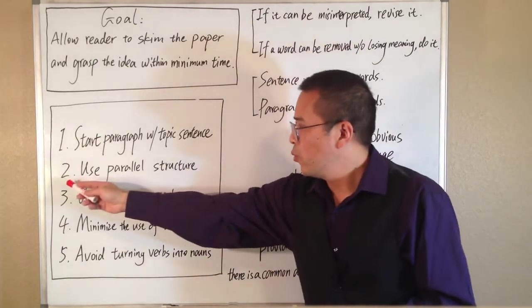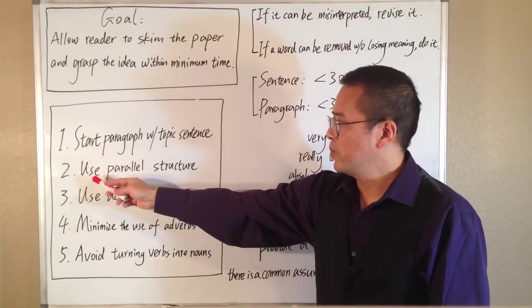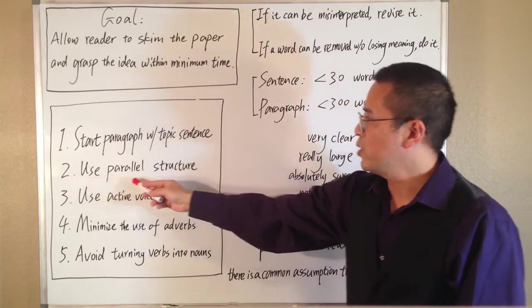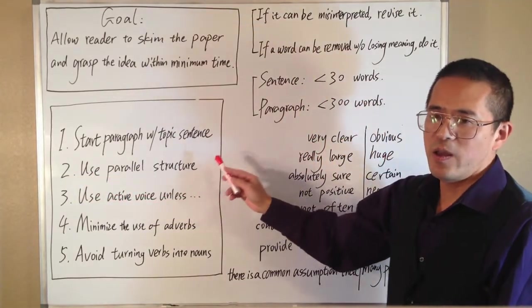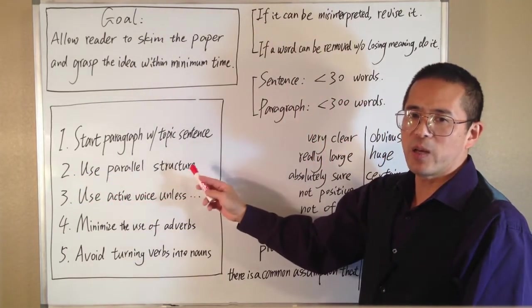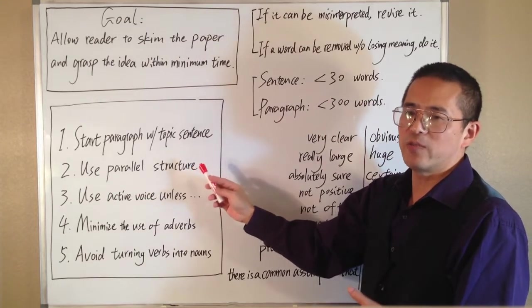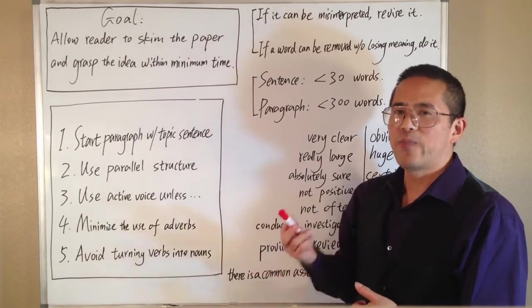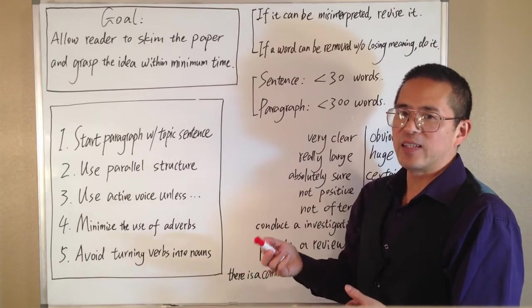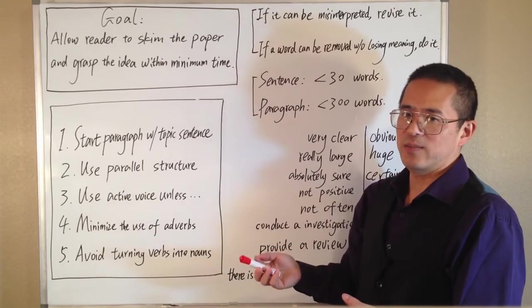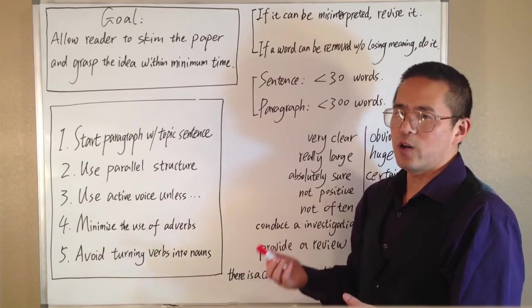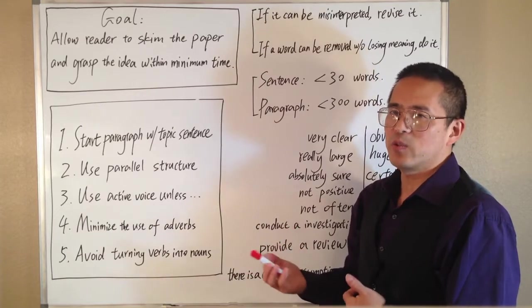Second, when comparing and listing items, always use parallel structure. Parallel structures keep the compared items in the same grammatic form. It adds balance, rhythm, and consistency to sentences, so the reader can easily follow and relate the compared items to each other.